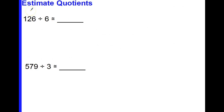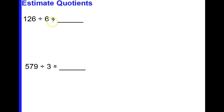We're going to simply estimate quotients. When we're estimating, we're not going to find an exact answer — we're going to find an estimated answer. Let's take a look again at 126 divided by 6.